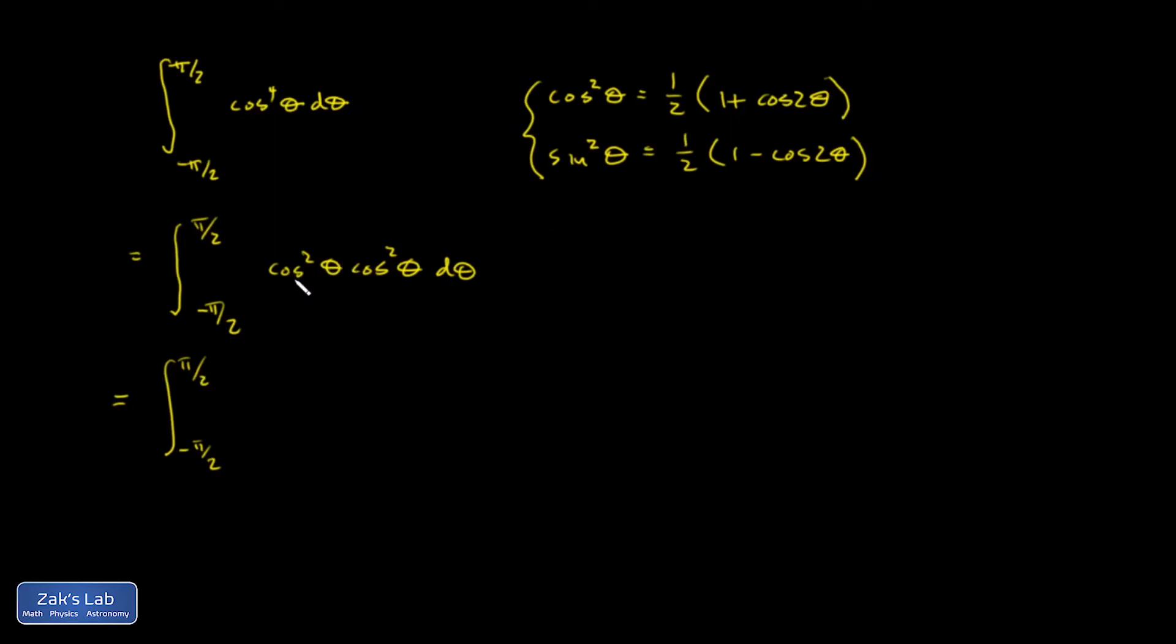That gives me one-half times 1 plus cosine 2 theta, one-half, 1 plus cosine 2 theta. So that's going to be a fourth, just factoring out those constants. 1 plus cosine 2 theta multiplied by itself.